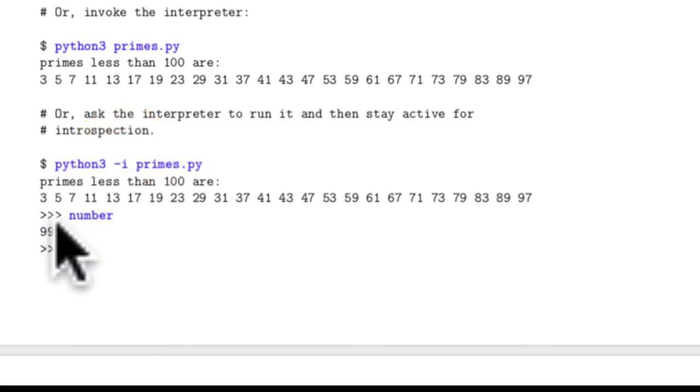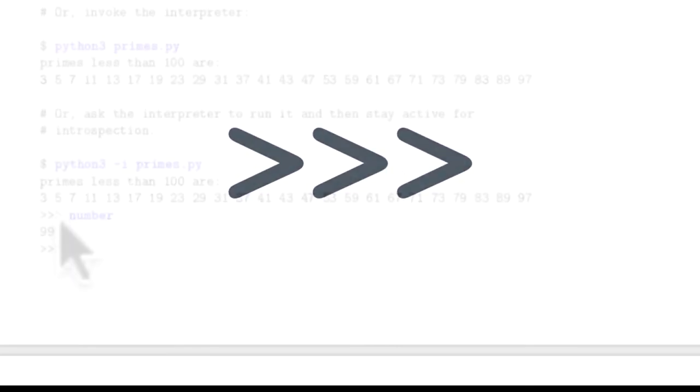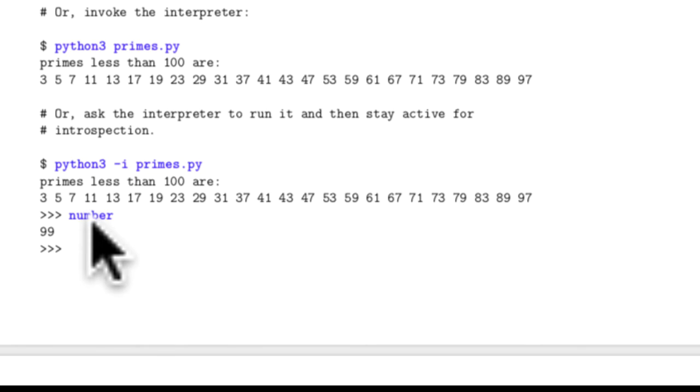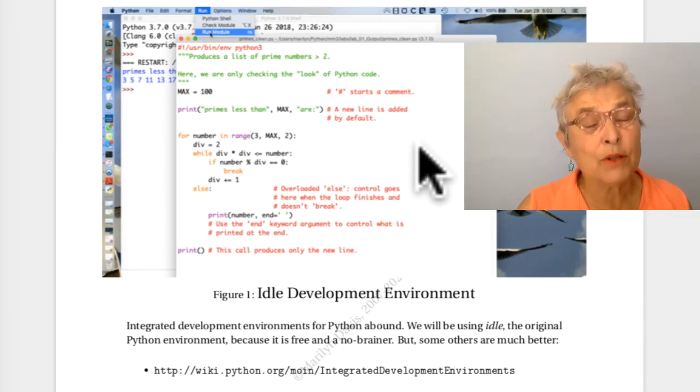If I specify Python 3 and I add a dash i for introspection and then say primes.py, it runs. But then immediately comes to me three greater than symbols. That's the interpreter's prompt. And it's saying to me, what would you like to do? And it will obey me when I ask it for anything that it should know because of the program that just ran. For example, here we have number and it reports to me the 99. Nothing comes back for anything else I might like. But nothing is in scope. So number is all we get here. But I could try out a function call that I just wrote or a class.